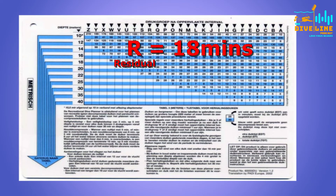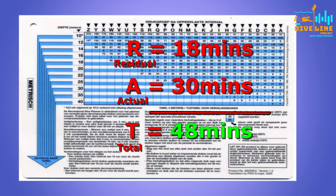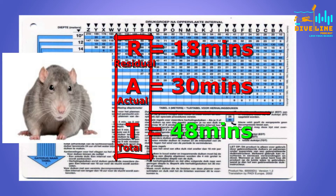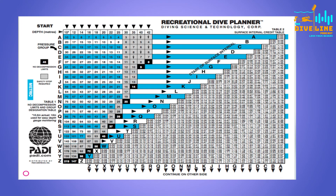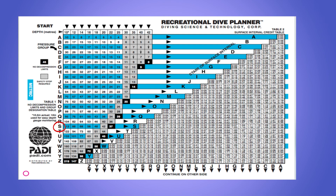We need to add this 18 minutes residual nitrogen to our actual dive time of 30 minutes, to give us a total time of 48 minutes. We apply this to dive number two by going back to the first page of the RDP and going through the same process. We choose 18 metres and look for 48 minutes — even though the actual dive time is 30 minutes, we've added our 18, so it's 48 minutes in total. Heading down the list to 48, we can see that we are now in pressure group S. Although that was exactly the same dive as our first one, because we had residual nitrogen in our systems, we've jumped eight places higher on the pressure group.